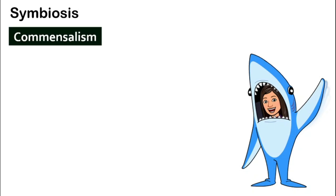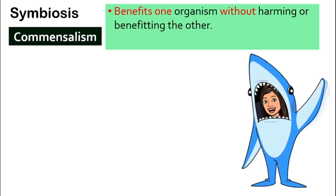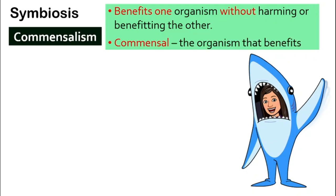The next type of symbiosis is commensalism. This is the type of interaction where one organism is benefited — meaning one organism is very happy — whereas the other organism does not benefit and does not get hurt; it doesn't really care. The organism that benefits has a special name called the commensal, and this is where the interaction's name, commensalism, comes from.